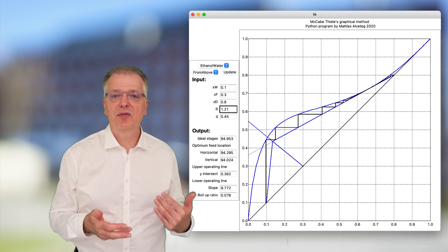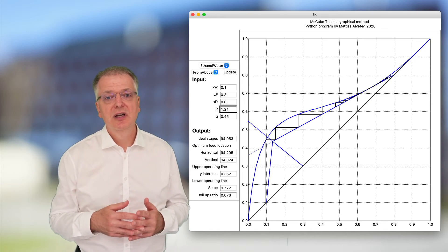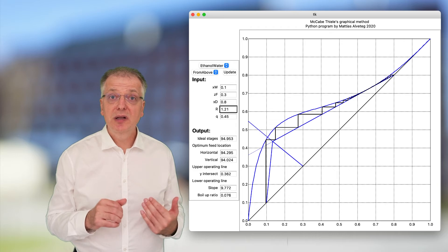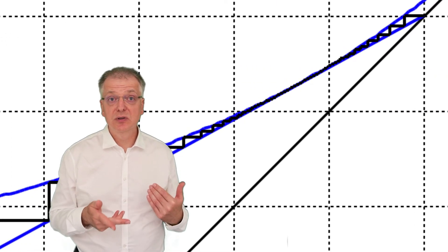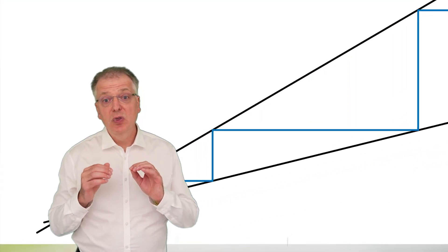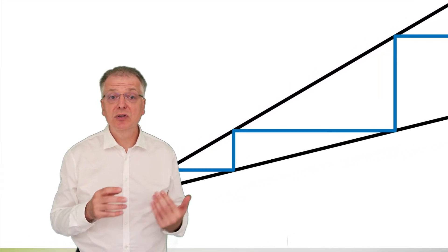I sometimes see students trying to calculate the number of equilibrium trays in such graphs, but that is nonsense. If the operating line intersects the system curve or is the tangent to the system curve in a point, you can never pass that point, no matter how many triangles you draw in your diagram.